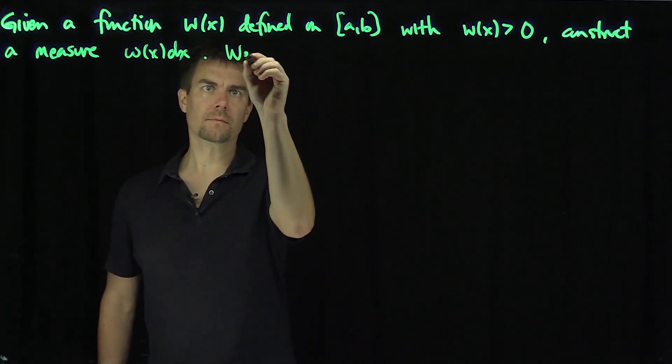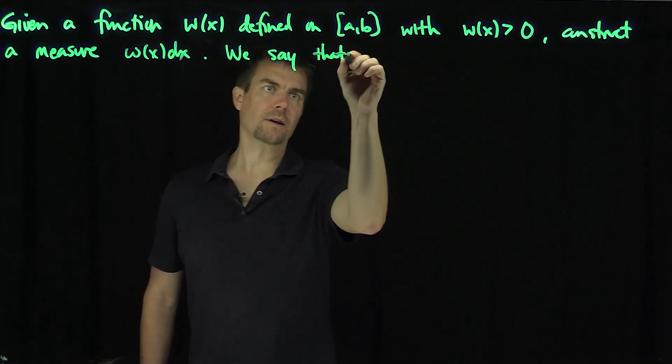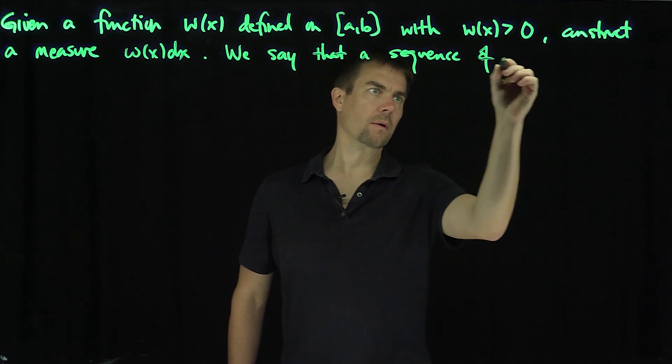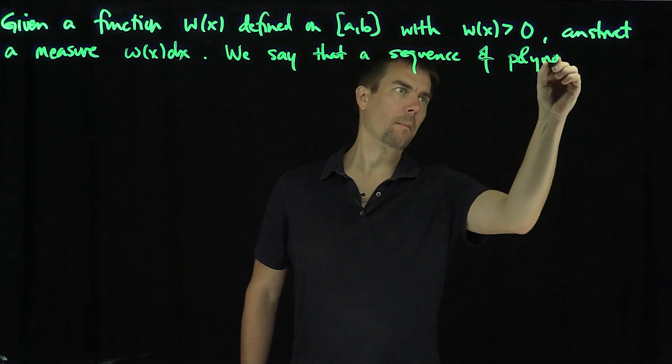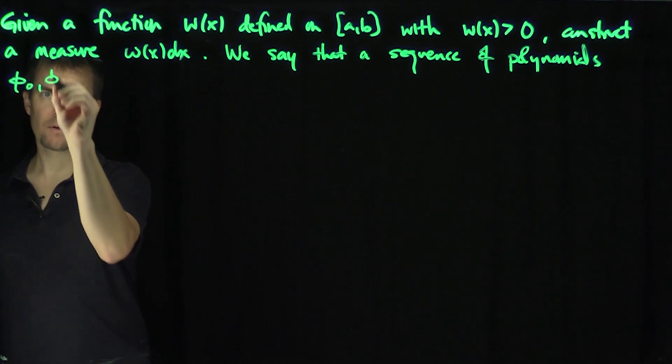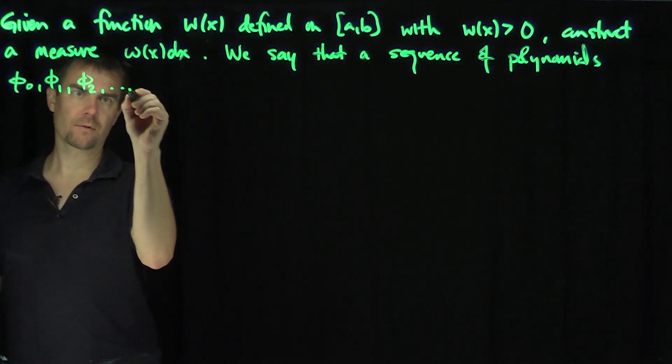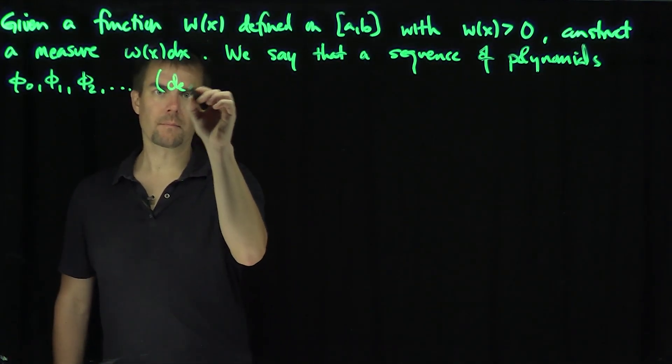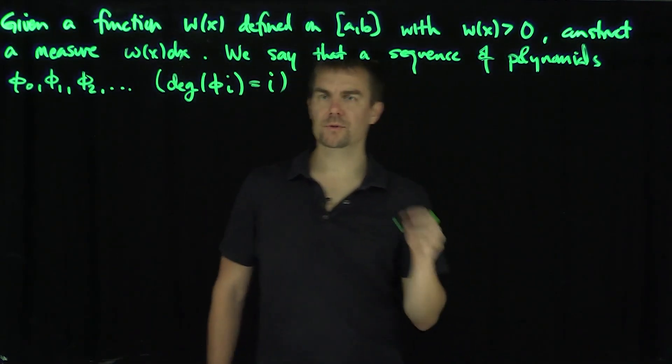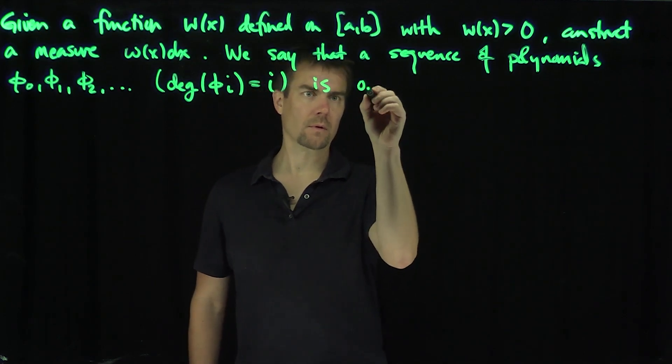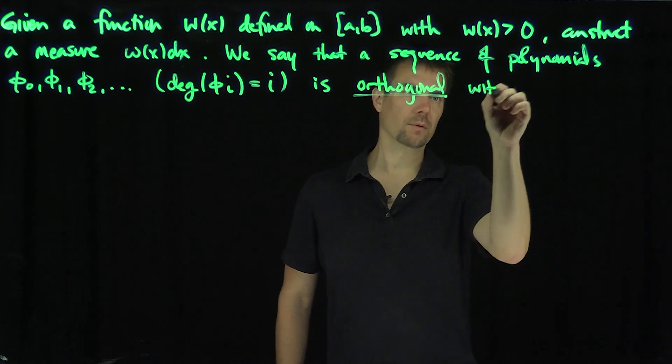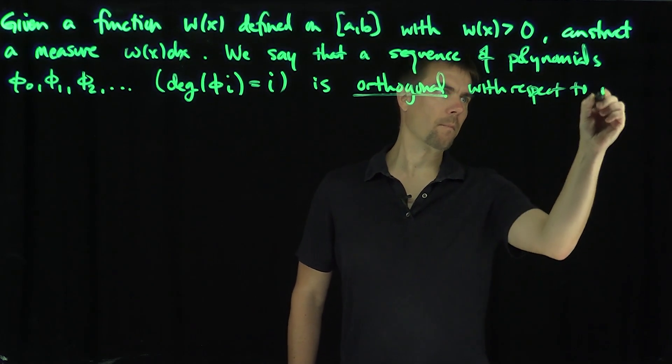We say that a sequence of polynomials φ₀, φ₁, φ₂ and so on...